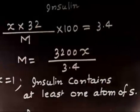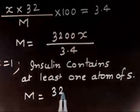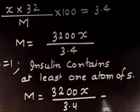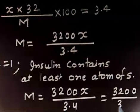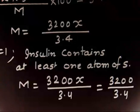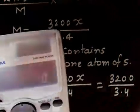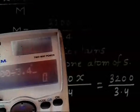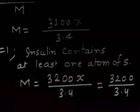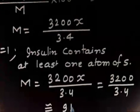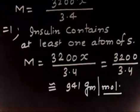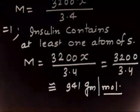With x = 1, M = 3200 / 3.4, which comes out to approximately 941 gram per mole. So the minimum molecular weight of insulin is around 941 g/mol.